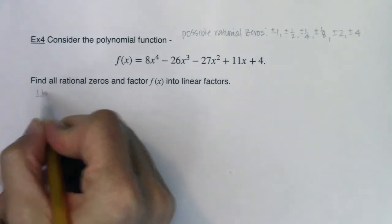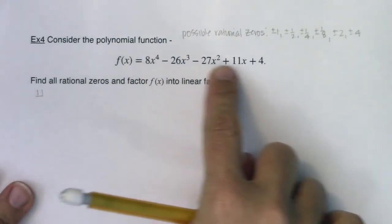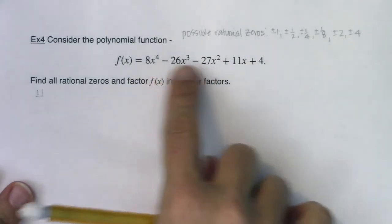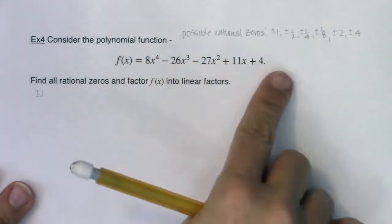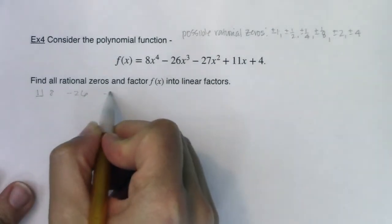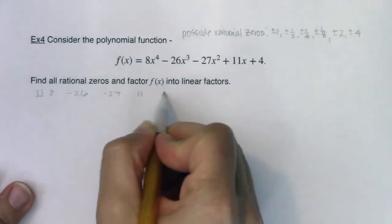I'm going to start with positive one and hope that it hits. If I'm going to guess one, let's use synthetic division. I've got descending powers of x, I've got no skipped powers. I see four, three, two, one, zero, so I don't need any placeholders. So eight, negative 26, negative 27, 11, and four.